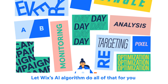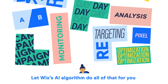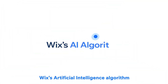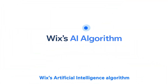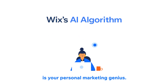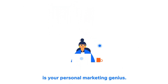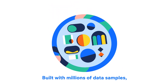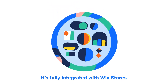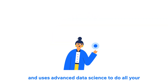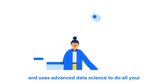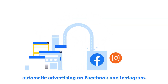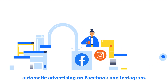Let Wix's AI algorithm do all of that for you. Wix's artificial intelligence algorithm is your personal marketing genius. Built with millions of data samples, it's fully integrated with Wix stores and uses advanced data science to do all your automatic advertising on Facebook and Instagram.